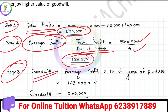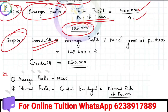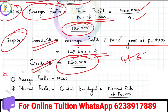In step 3, we calculate goodwill. Goodwill equals average profit multiplied by number of years of purchase. Average profit is 1,25,000 and the number of years is 2, so goodwill equals 1,25,000 × 2 = 2,50,000. This video is worth 4 plus 3 — that is 7 marks in total.